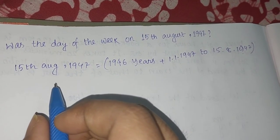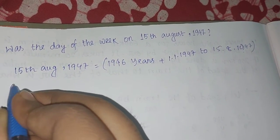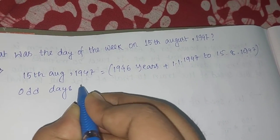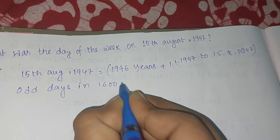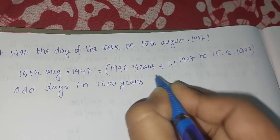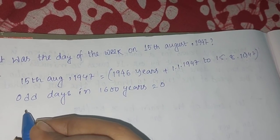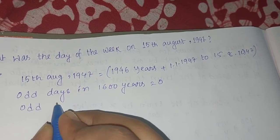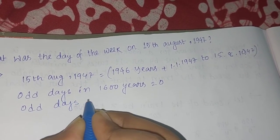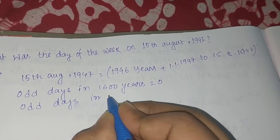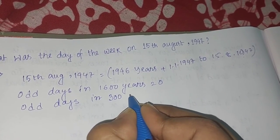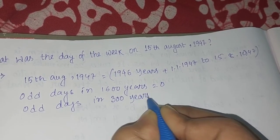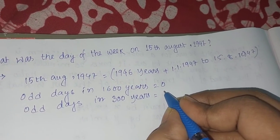If I try to understand, then I can find odd days in 1600 years. You know that for 1600 years it is zero. And if I try to find odd days in 300 years, then that is...